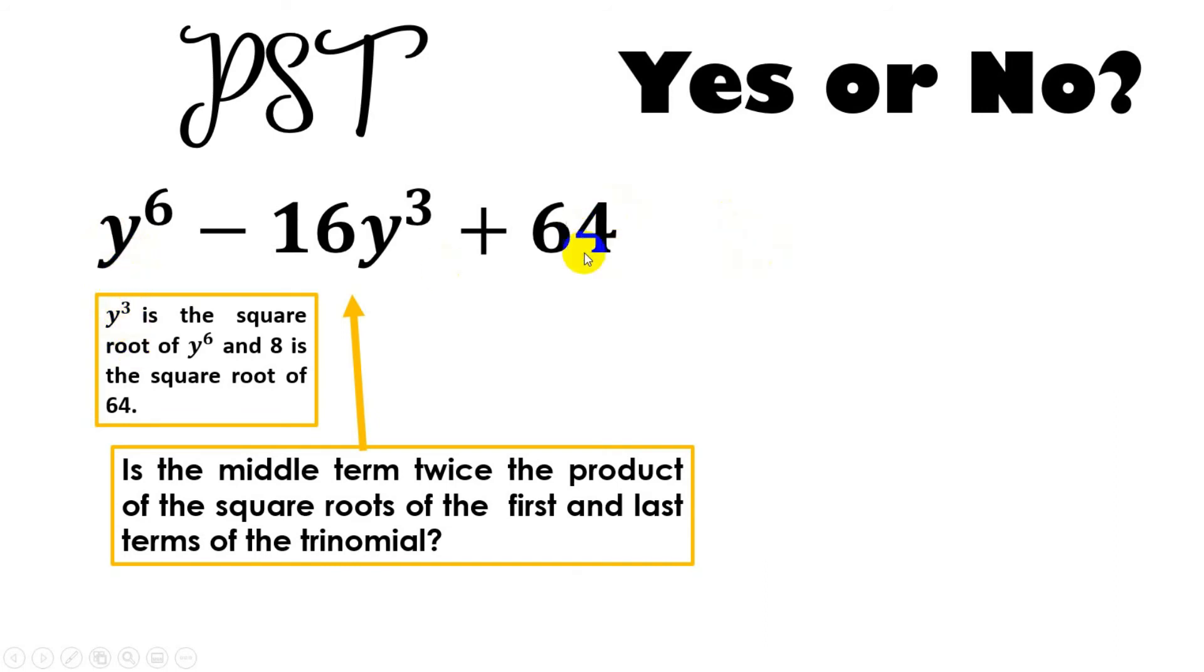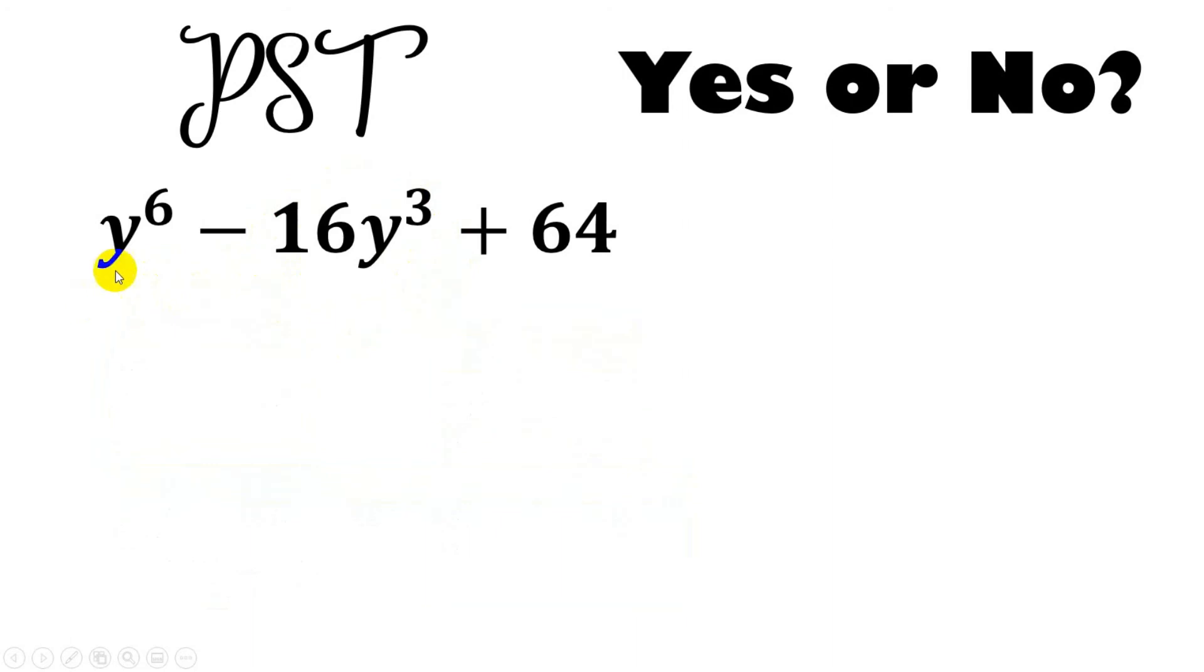Get the square root of the last term. Square root of 64 is 8. Then, multiply both. 8 times y cube is 8y cube. Multiply by 2. The answer is 16y cube. And is that indeed our middle term? Yes. That is why y to the 6th power minus 16y cube plus 64. Yes, it is a PST.